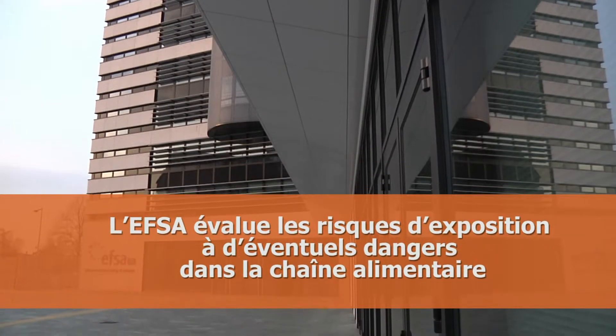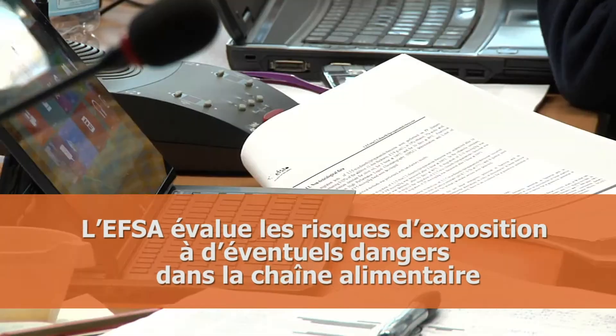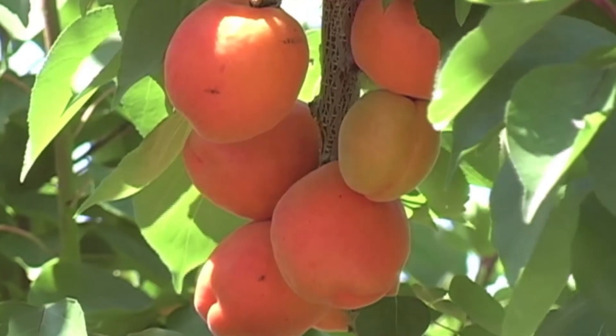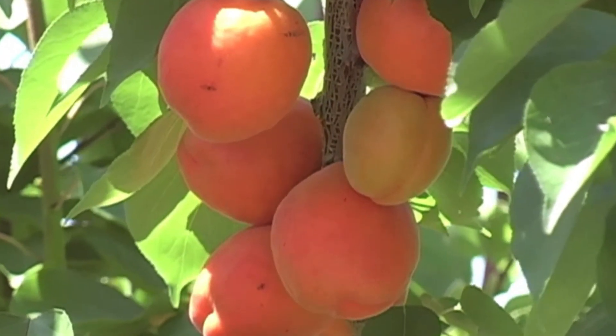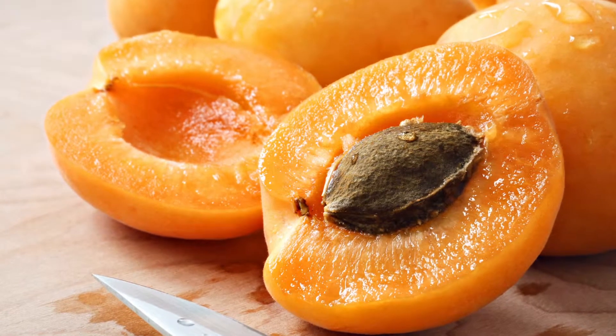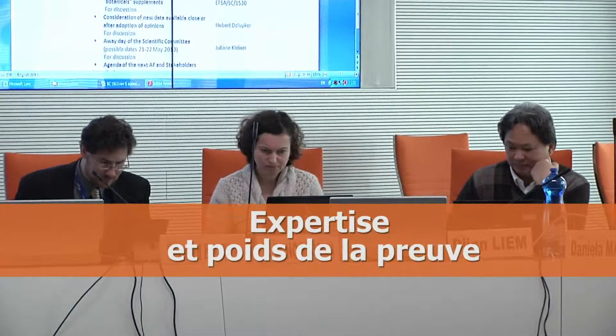EFSA assesses the level of risk based on the likely exposure of humans, animals and the environment to possible hazards in the food chain. A hazard is a possible threat related to the intrinsic properties of a substance. For example, amygdalin is a substance present in the stone of apricots. As a chemical it is quite toxic and therefore a hazard. But because we do not eat the stone, the consumer is not exposed to it and therefore we consider that the risk to the consumer is low. We believe that scientists can clarify through expert judgement and the weight of evidence what is or is not an endocrine disruptor.